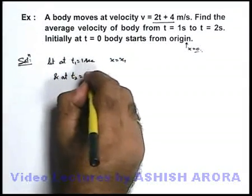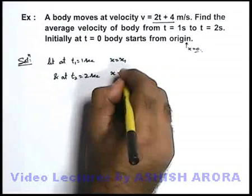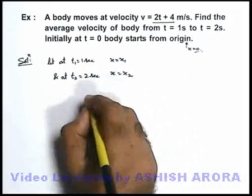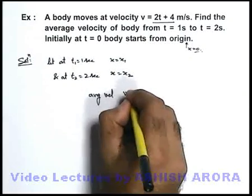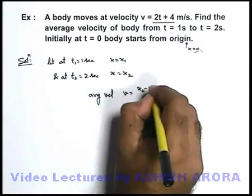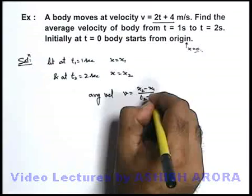And at time t₂ = 2 seconds, the position was x₂. Then we can directly state the average velocity between time t₁ to t₂ can be written as (x₂ - x₁)/(t₂ - t₁).